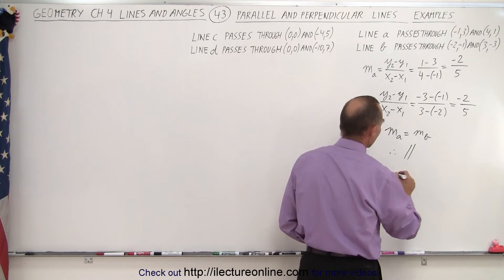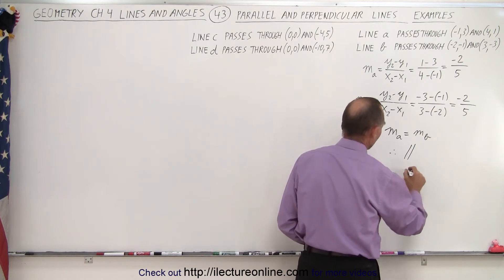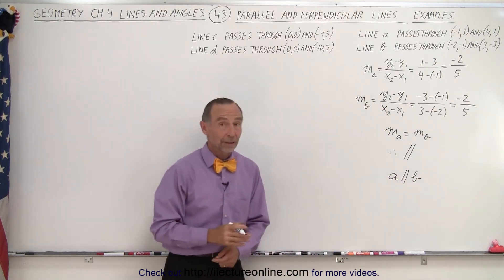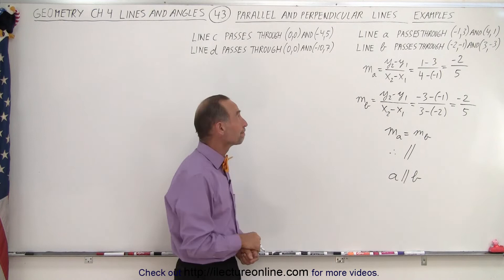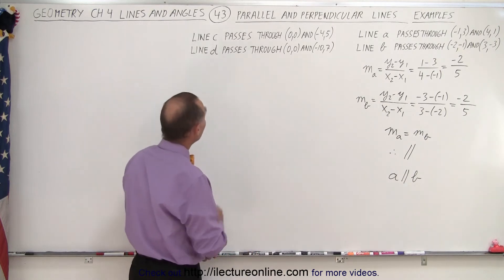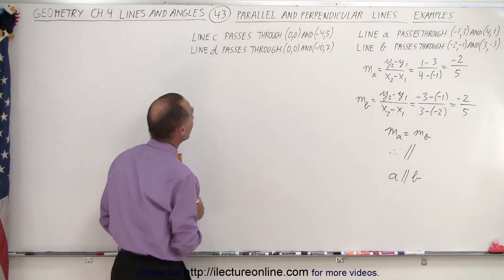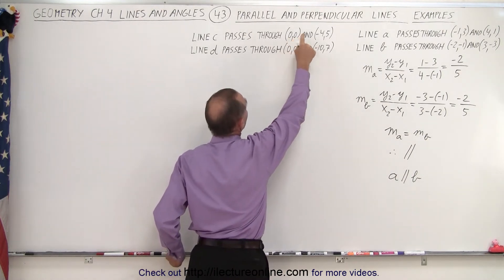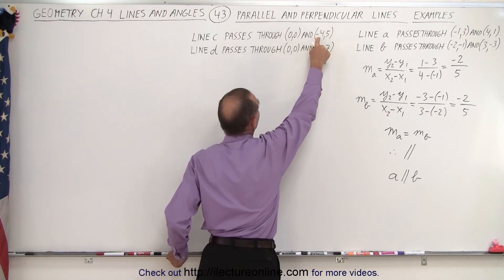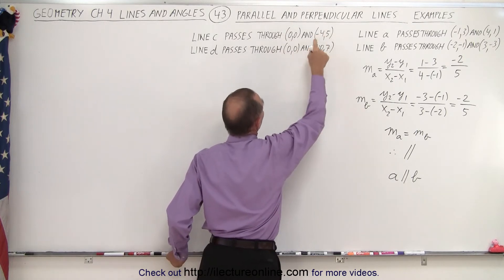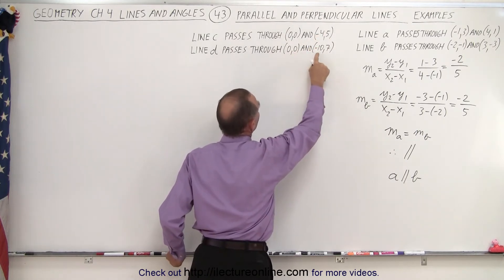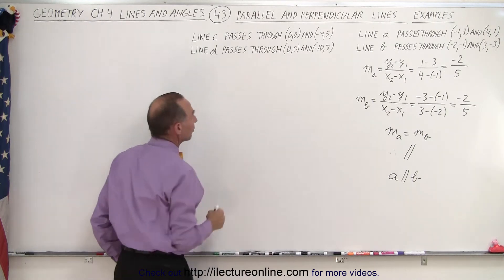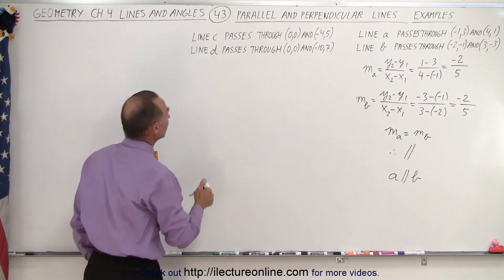So we can say that A is parallel to line B. Now let's try the next two lines. We have X1, Y1 and X2, Y2 for each line, and we're going to take the difference between these to find the slopes.